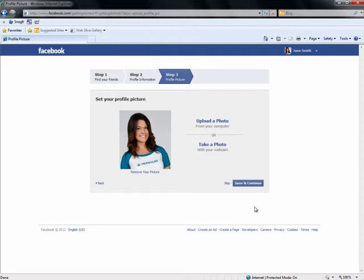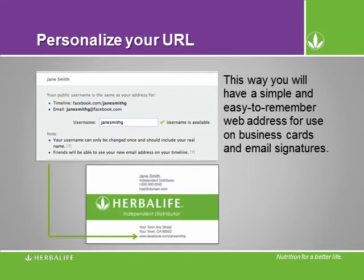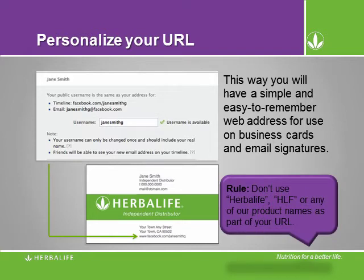After creating your account, you may also add a cover image for your timeline. Make sure to follow the same guidelines when choosing your cover picture. You may also personalize your URL, which will make it easier for others to find you online and give you a web address for use on business cards and email signatures. Watch out though — once you have set up your URL, you can never change it. Choose your first and last names and your address will be simple and easy to remember.